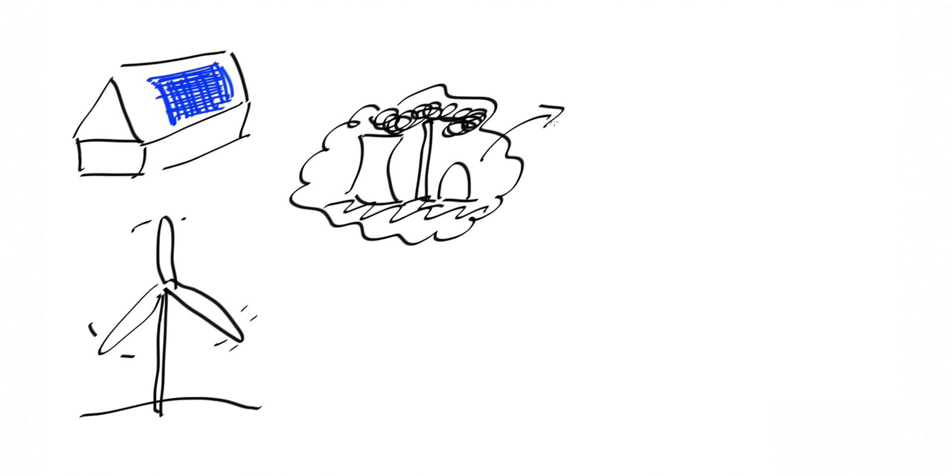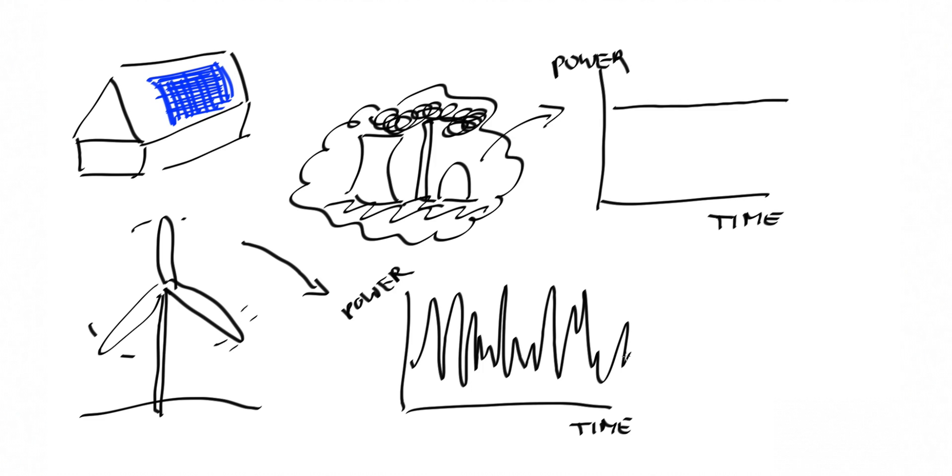However, there is no free lunch in that the power output characteristics of such renewables are very different from a conventional power plant, whose power production varies slowly with time. On the other hand, the power output of renewables can be highly intermittent.